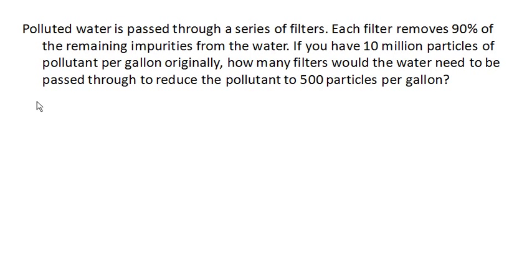So here, we're going to set up an equation where our population, if you will, is representing the pollutant per gallon. And N, instead of representing years here, is going to represent the number of filters that we apply to our water.